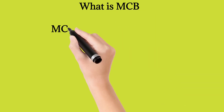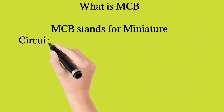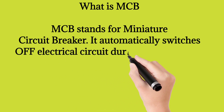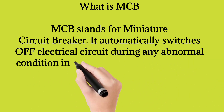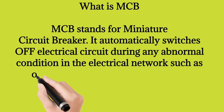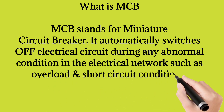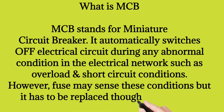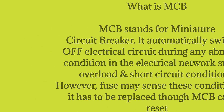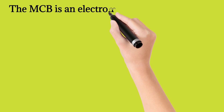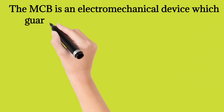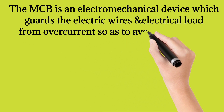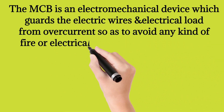What is MCB? MCB stands for Miniature Circuit Breaker. It automatically switches off the electrical circuit during any abnormal condition in the electrical network such as overload and short circuit conditions. However, a fuse may sense these conditions but it has to be replaced, whereas MCB can be reset. The MCB is an electromechanical device which guards the electric wires and electrical load from overcurrent so as to avoid any kind of fire or electrical hazards.